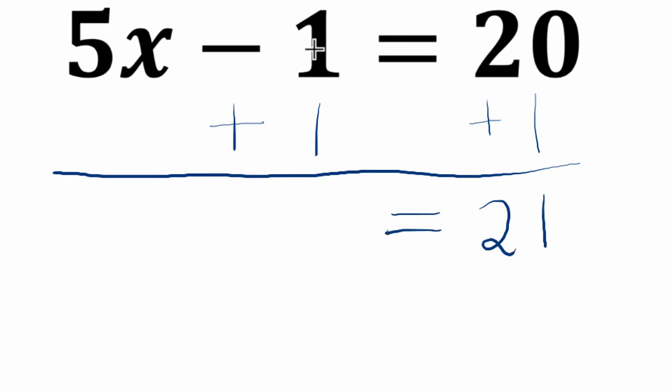On the left, negative 1 plus 1 is 0, so the only term that's left is 5x. So we know 5 times something is 21. To undo that and isolate x, I'm going to divide both sides by 5.